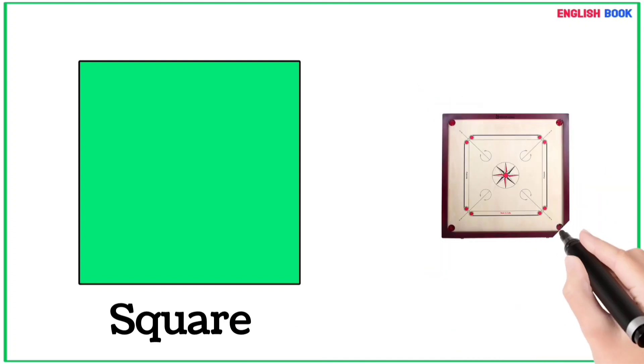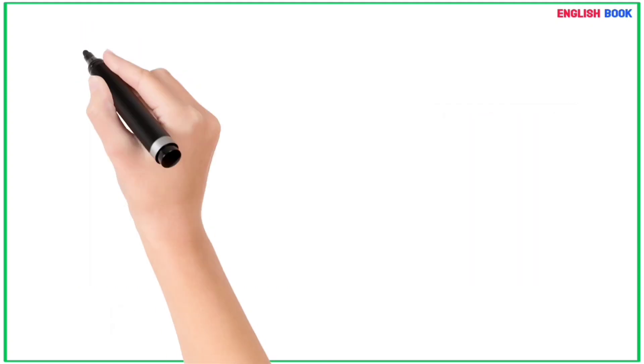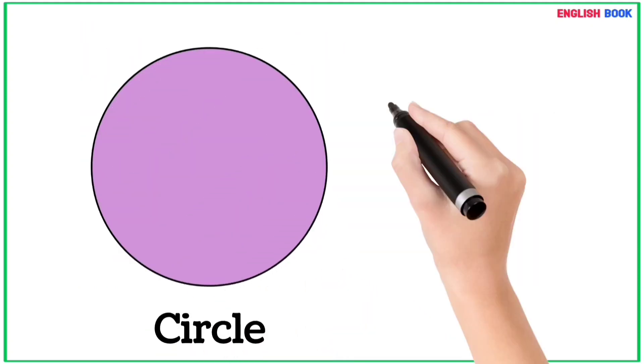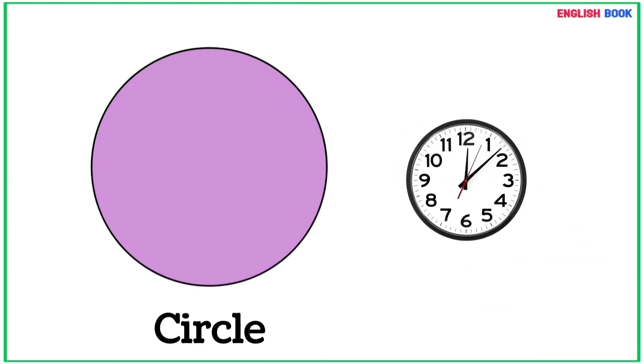Square - column board is a square shape object. Circle - clock is a circle shape object.